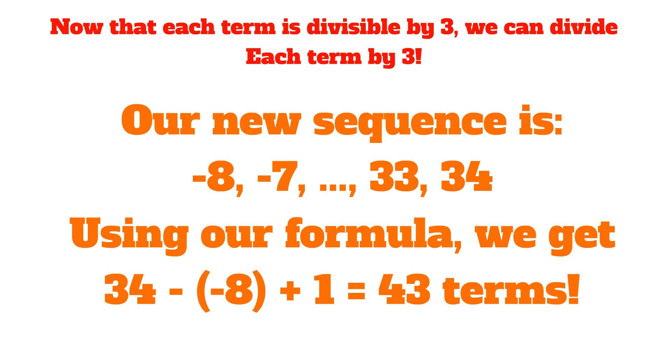Our new sequence is negative 8, negative 7, all the way to 33, and 34. Using our formula, and yes, we can use our formula with negative numbers, we get 34 minus negative 8, which gives us 34 plus 8, plus 1, which gives us 42 plus 1, or exactly 43 terms in this list.